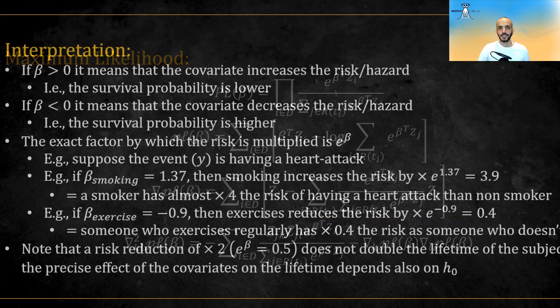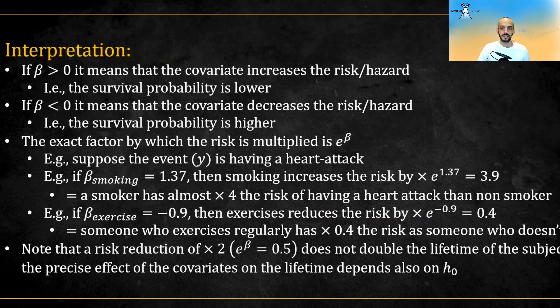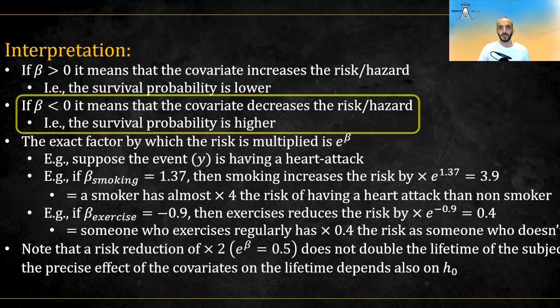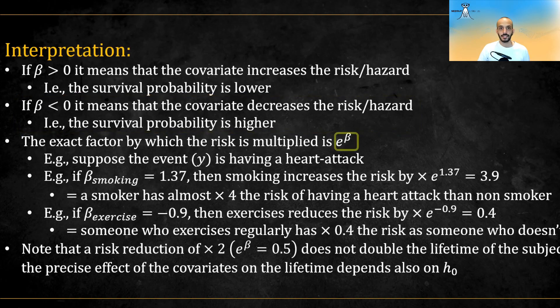Now, how do we interpret the result that we got? Well, if beta is positive, it means that the associated covariate increases the risk, meaning that the survival probability is lower, and vice versa. The exact factor by which the risk is multiplied is exponent of beta.